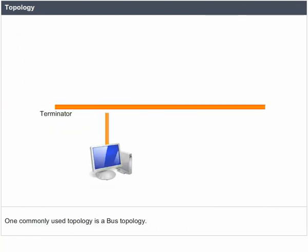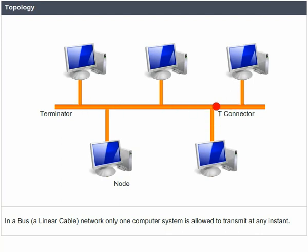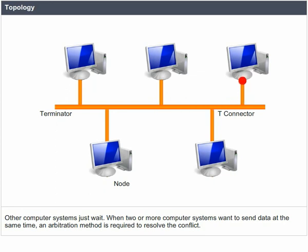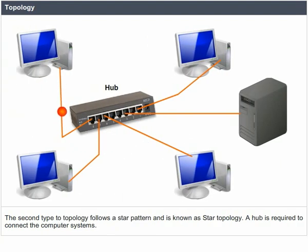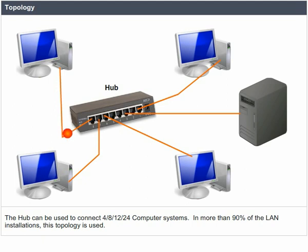Topology. One commonly used topology is bus topology. In a bus (a linear cable network), only one computer system is allowed to transmit at any instant; others wait. When two or more computers want to send data simultaneously, an arbitration method is required to resolve the conflict. The second type is star topology, which requires a hub to connect computers. The hub can connect 4, 8, 12, or 24 computer systems. In more than 90% of LAN installations, this topology is used.